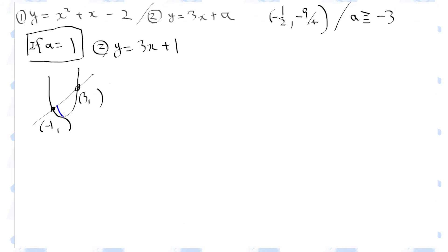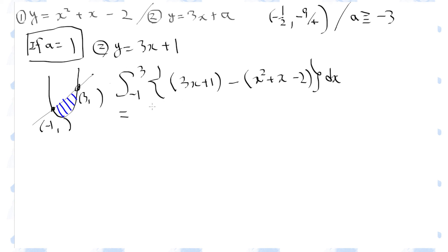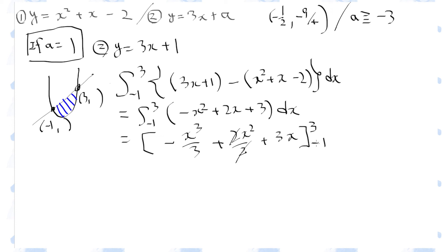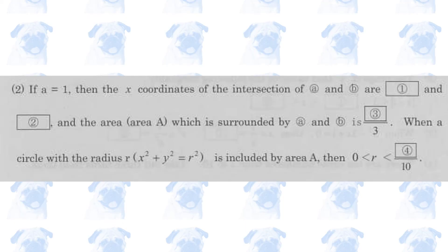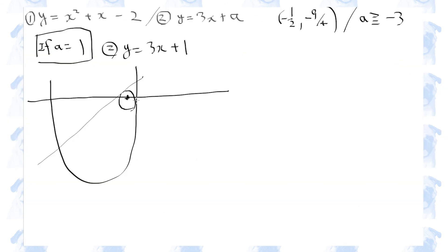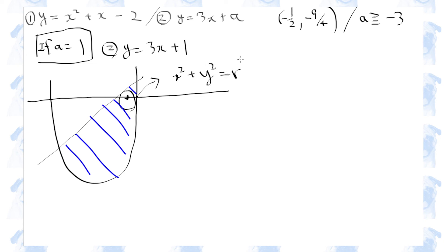Next, we need to find the area bounded by the two graphs. We set up and expand the integral. The area is then calculated. Now we assume there is a circle enclosed in this area, with equation x squared plus y squared equals r squared, where r is the radius and the center of the circle is at the origin.